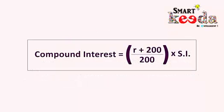To solve this kind of question we have a short trick: Compound Interest for two years = (R + 200) / 200 × given SI. Now let's take an example and apply this short trick.